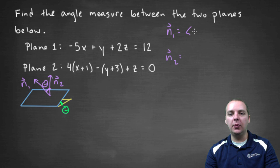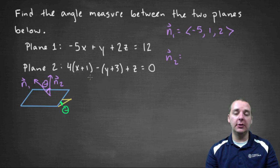So for plane one, the normal vector is negative five, one, two. And even though plane two is in standard form, you can still read off the normal vector very easily. It's four, negative one, one.